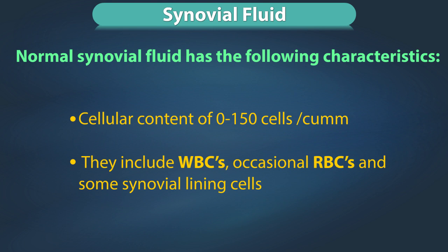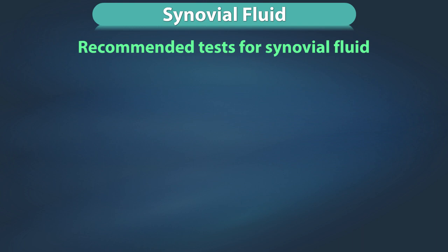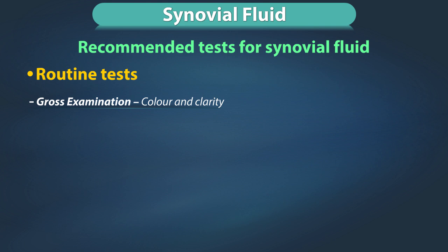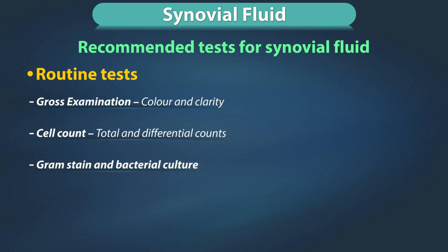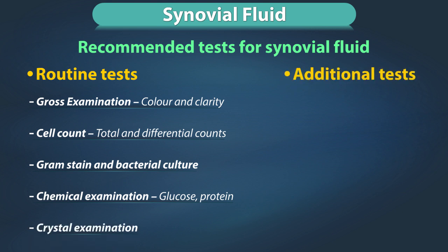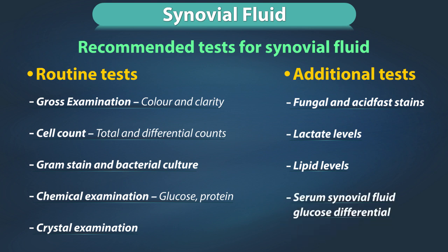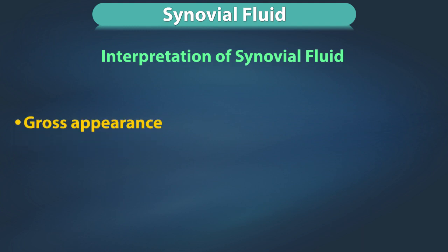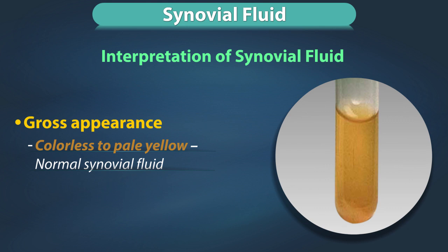Cellular content includes white blood cells, occasionally red blood cells, and some synovial lining cells. Recommended tests for synovial fluid include routine tests: gross examination for color and clarity, cell count for total and differential counts, gram stain and bacterial culture, chemical examination for glucose and protein levels, and crystal examination. Additional tests could include fungal and acid-fast stains, lactate levels, lipid levels, and serum-synovial fluid glucose differential.